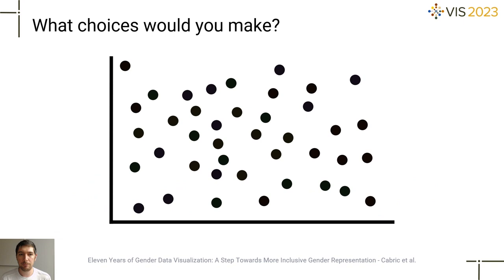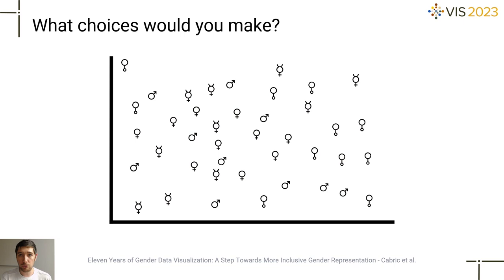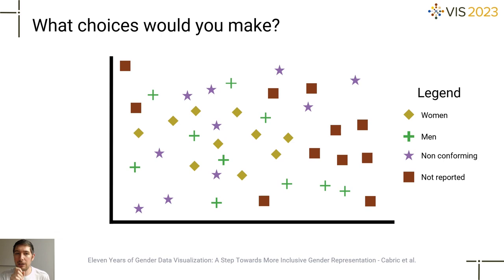I want to start with a simple question. If you were in a position to visualize data about gender, how would you visually distinguish the genders? Would you prefer to use colors? Or iconic shapes? Or just shapes? Or a combination of colors and abstract shapes? But after you have selected the appropriate visual variables, what words or symbols would you prefer to use to distinguish between genders?